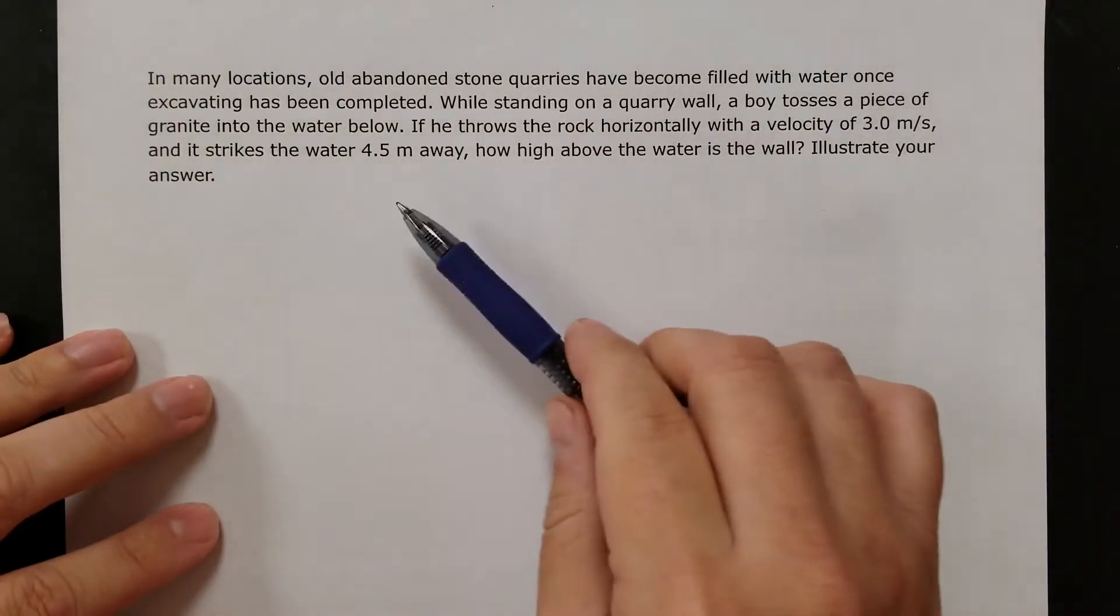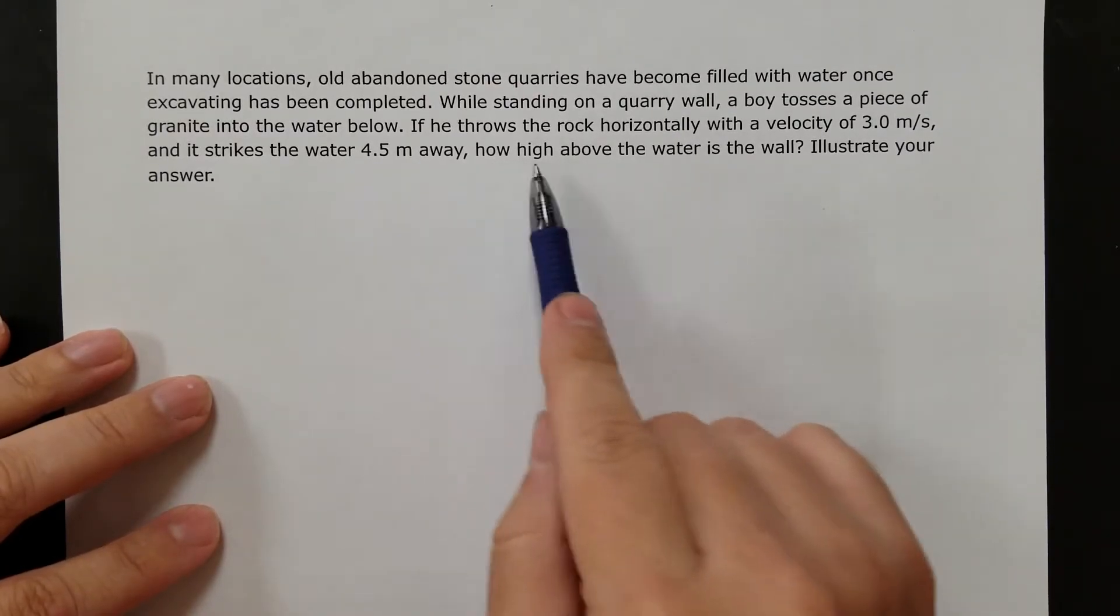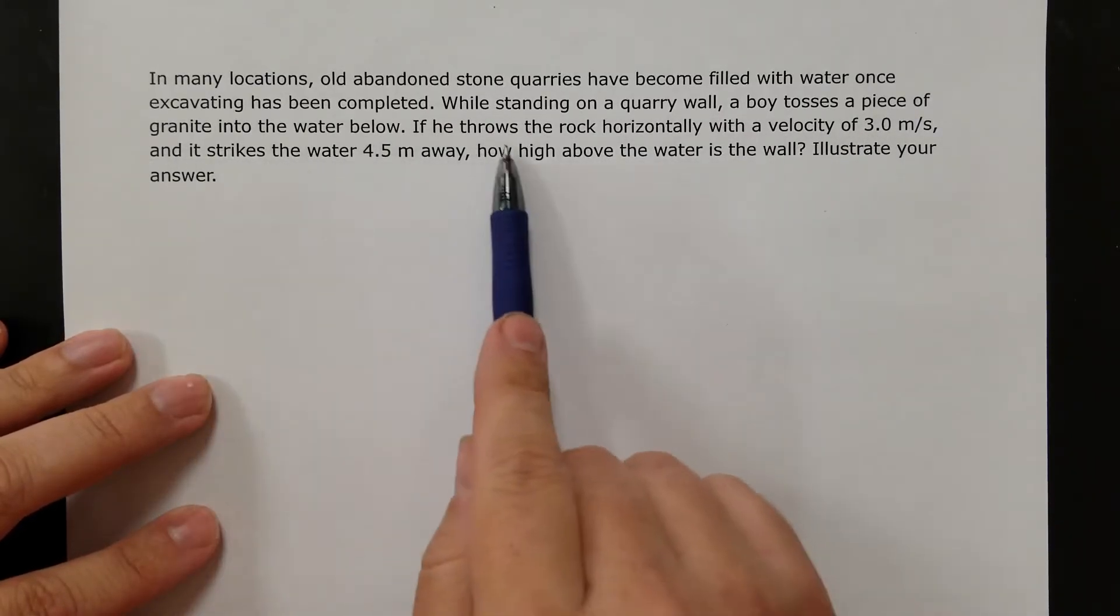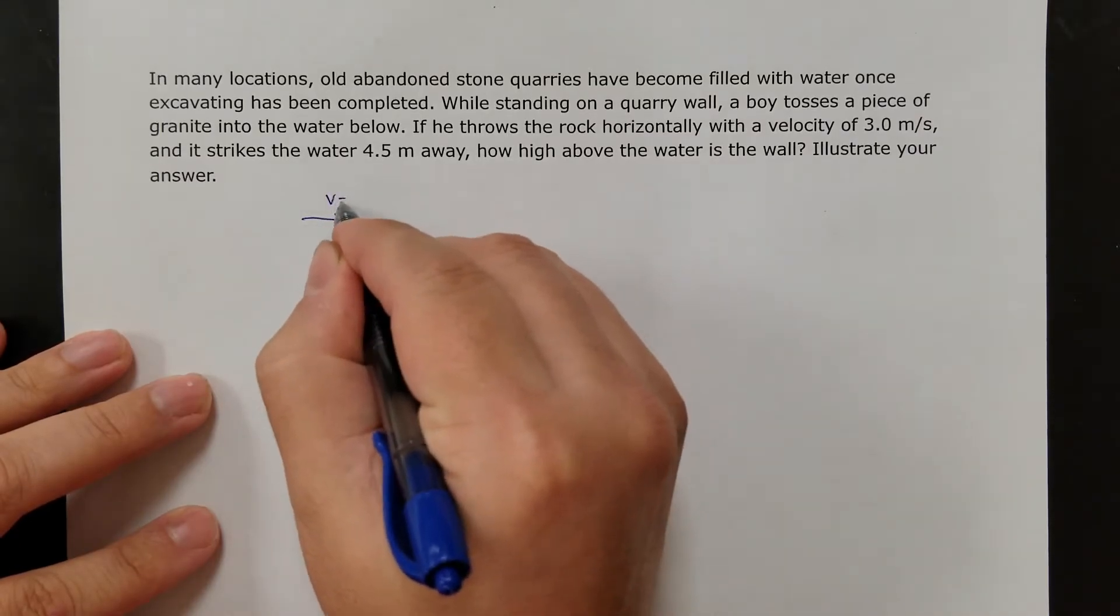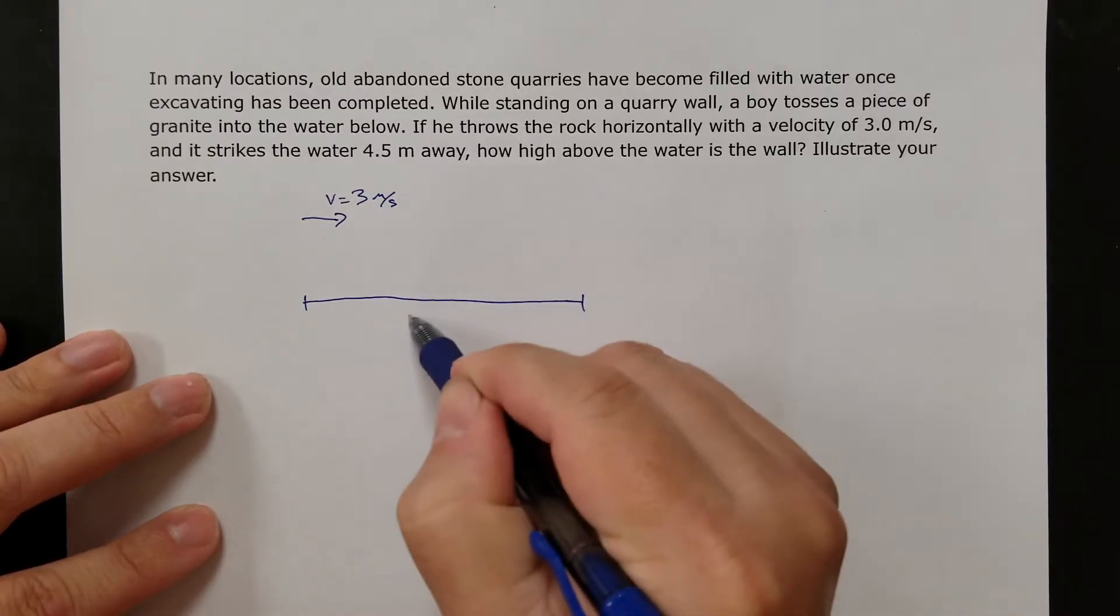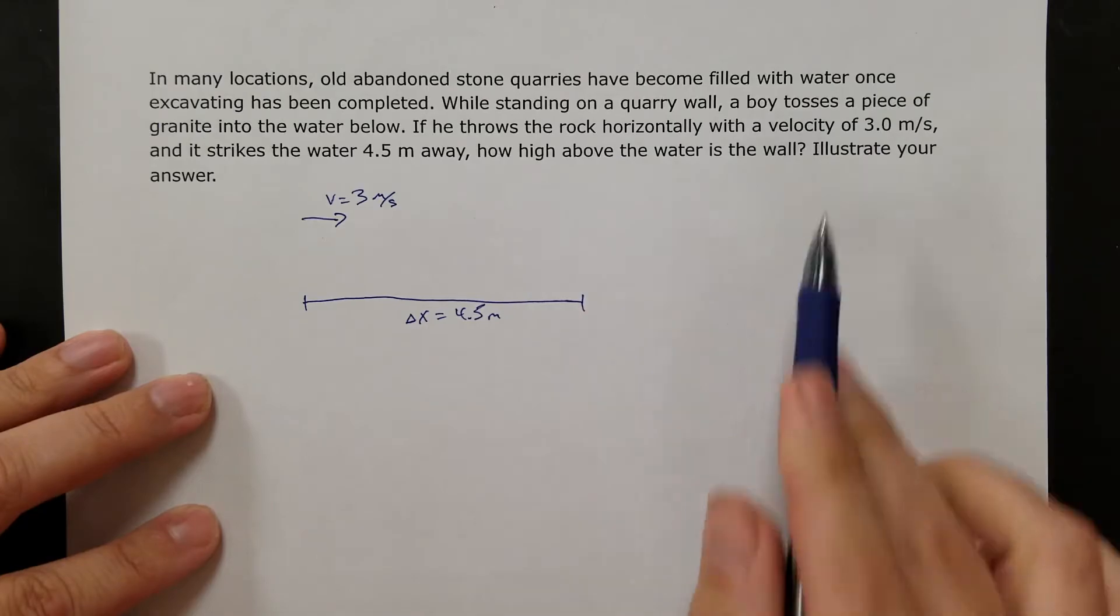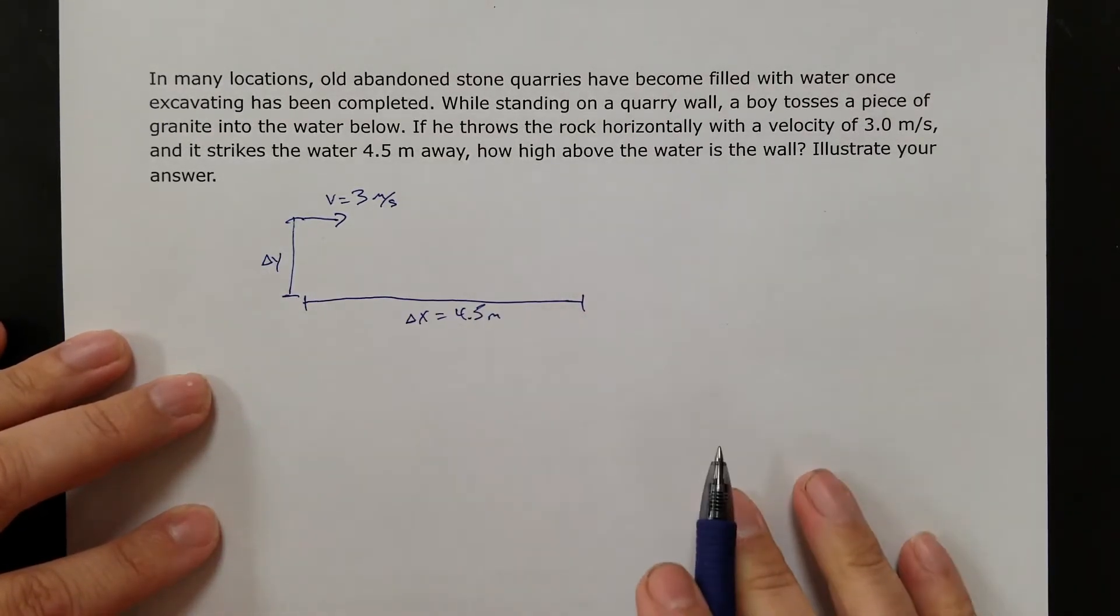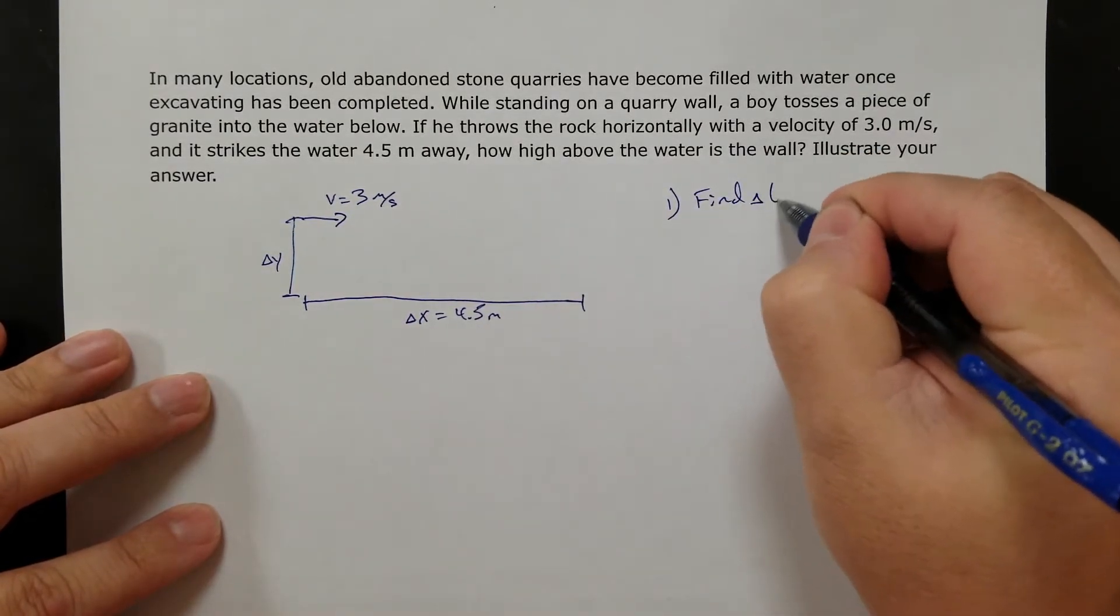Okay, so last problem. This one is a little different because in this case, I'm not going to know the height. I'm trying to figure out the height. So read through it. Standing on a quarry wall, boy tosses a piece of granite. If he throws the rock horizontally with the velocity of 3 meters per second and it strikes the water 4.5 meters away, how high above the water is the wall? So I'm trying to figure out my delta y. So again, first step, we always think, I need to find the time.